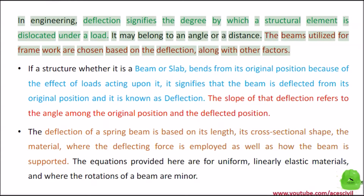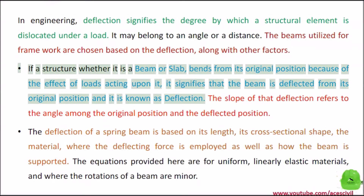In engineering, deflection signifies the degree by which a structural element is dislocated under a load. It may relate to an angle or a distance. If a structure — whether it is a beam or slab — bends from its original position because of the effect of loads acting upon it, it signifies that the beam is deflected from its original position, and this is known as deflection.